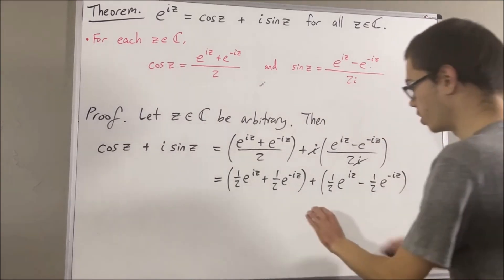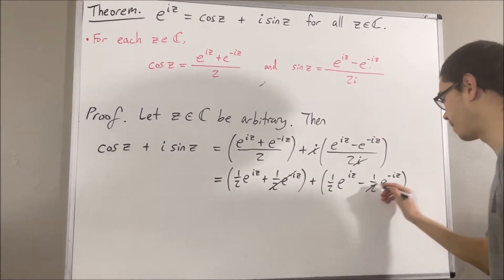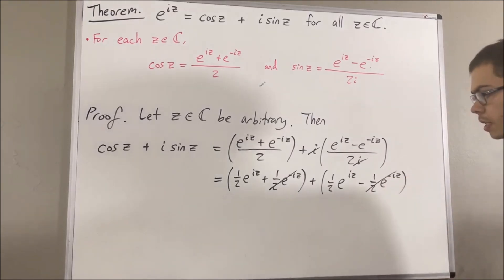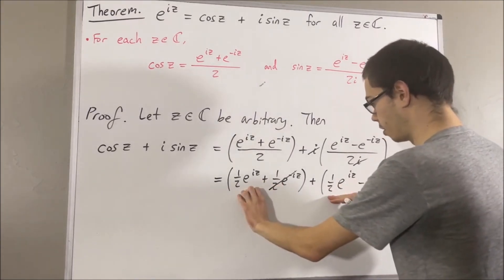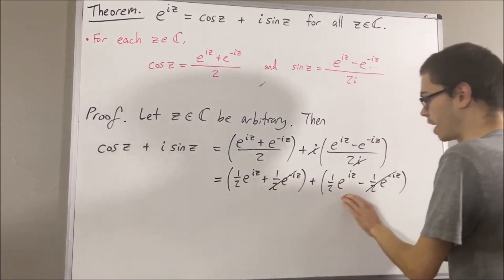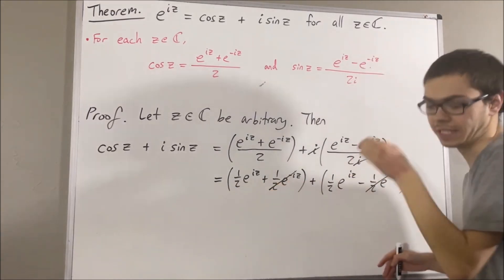Right, and now, we see that the 1 half e to the negative iz will cancel out. But then, these two guys combine together. 1 half e to the iz plus 1 half e to the iz is equal to e to the iz.